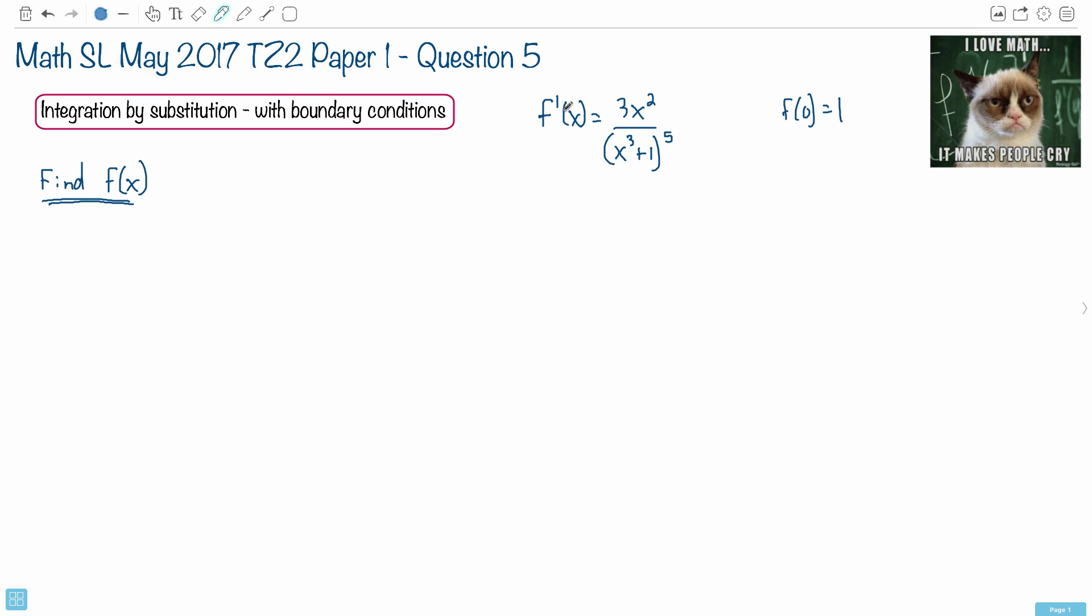We're given this. We're given f'(x) equals 3x squared over x cubed plus 1, all that to the power of 5. Oh god. And we're told some boundary conditions. We're told that f at 0 equals 1. So we're sort of hoping to do something with that.